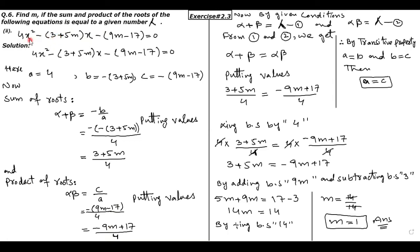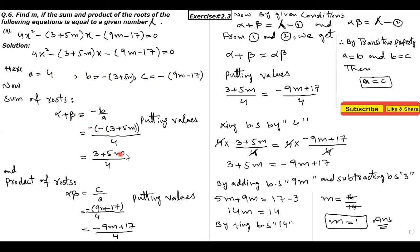Ab Part 2 mein hame wohi 'm' ki value find karni hai usi condition se, lekin equation different hai. Sabse pehle sum of roots aur product of roots find karenge. A ki value 4 hai (coefficient of x square), B ki value coefficient of x hai aur constant term bhi given hai. Sum of roots ka formula minus B divided by A use karte hain — B bhi negative tha toh negative into negative positive ban gaya, result aaya: 3M plus 5 divided by 4. Product of roots C divided by A: minus into 9M and minus 17 divided by 4 — minus ko inside multiply karne par ban gaya minus 9M plus 17 divided by 4.